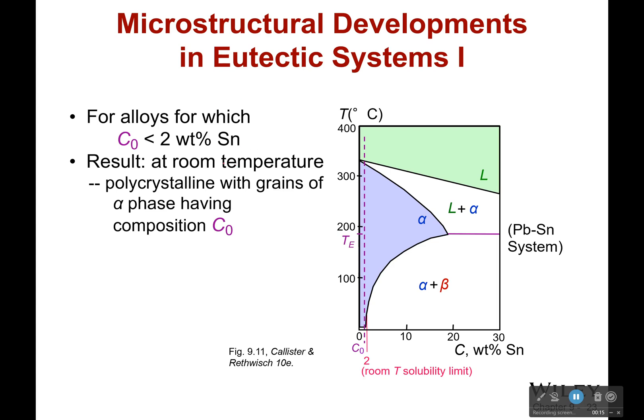So at room temperature, it's polycrystalline with grains of alpha phase having a composition very high in lead and very low in tin. So at this point, way up here in the liquid region, it is just mostly a liquid lead with a little bit of tin molecules mixed in there. But they're just a perfect mixture because it's liquid.